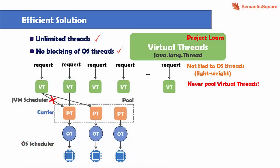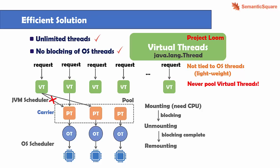To summarize: if a virtual thread needs CPU time, it is mounted onto a carrier thread. If it encounters a blocking operation, it is unmounted and the carrier thread is freed so that it can be mounted with a different virtual thread. Once the blocking operation is done, the scheduler will remount the virtual thread onto a carrier thread — which can be a different carrier thread from the first one it was mounted on.